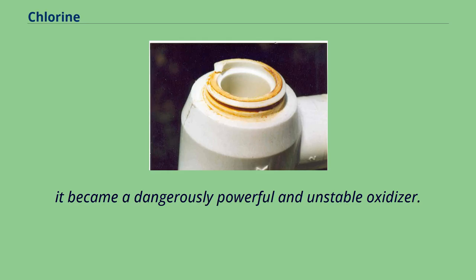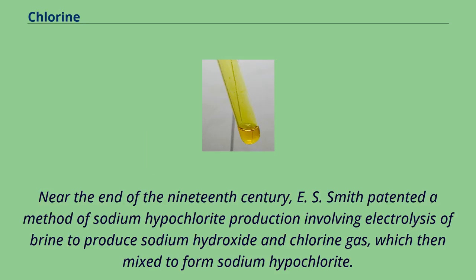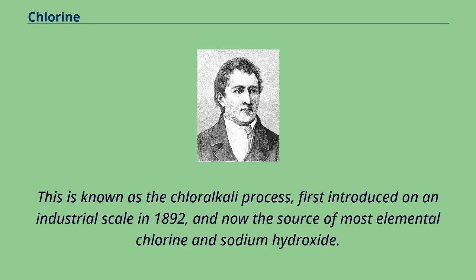Near the end of the 19th century, E.S. Smith patented a method of sodium hypochlorite production involving electrolysis of brine to produce sodium hydroxide and chlorine gas, which then mixed to form sodium hypochlorite. This is known as the chloralkali process, first introduced on an industrial scale in 1892, and now the source of most elemental chlorine and sodium hydroxide.